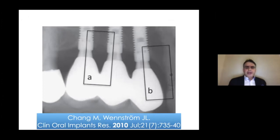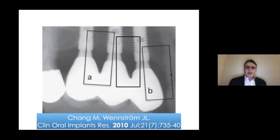But looking at this radiograph from that study, you can see this distal implant is placed much more coronally compared to the mesial implant. So is there any impact of this vertical discrepancy on the significant bone loss we see on just this distal implant? This is something we have to look into.